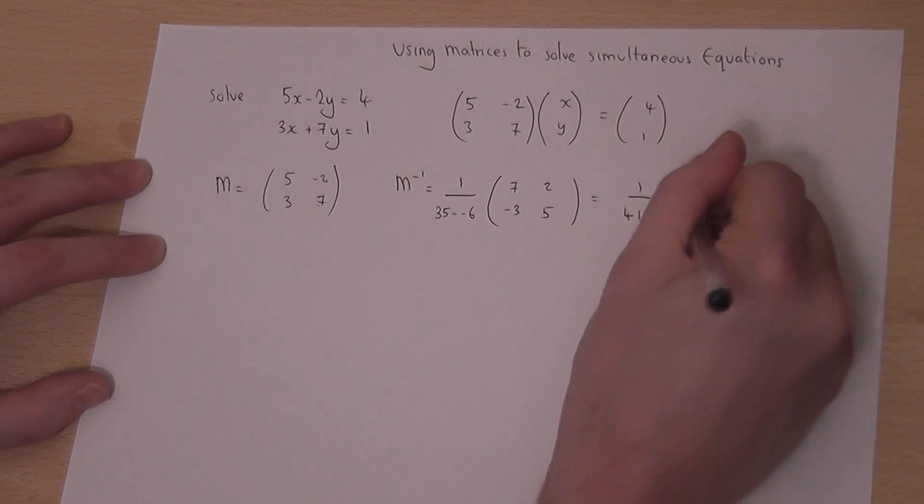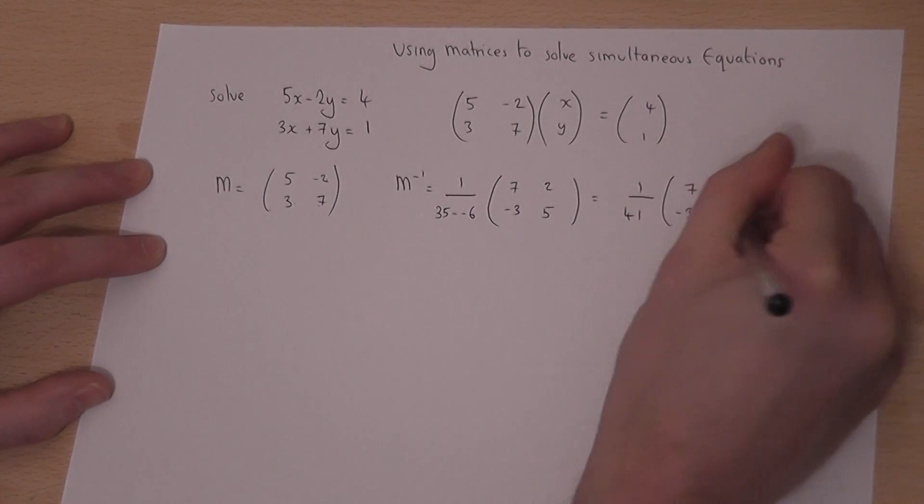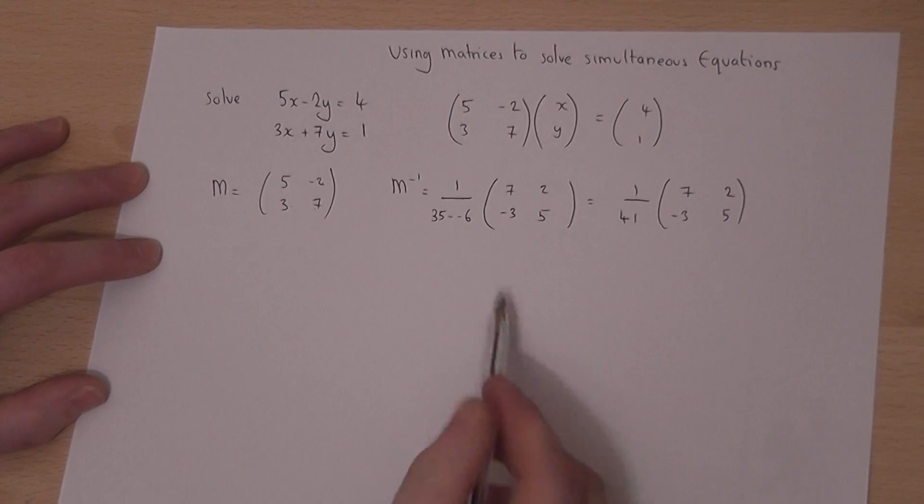So this becomes 1 over 41, with the matrix 7, 2, minus 3, 5. So we've found M inverse.